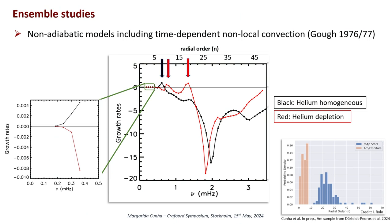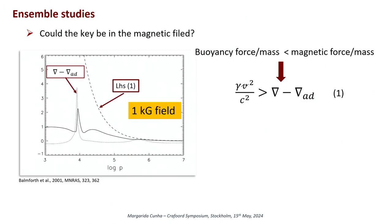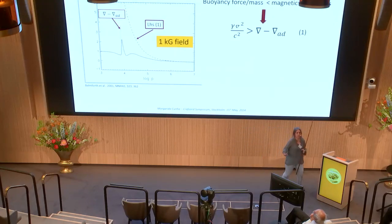Let me tell you about something that has interested Douglas for quite some time: the interaction between convection and magnetic field, and how the magnetic field may suppress convection. In these stars, you can do a back-of-the-envelope calculation to try to understand if a kilogauss field will suppress convection. This is a very shallow layer of convection in these stars. Here, v and c are the Alfvén and sound speed velocities. What I'm plotting is the left-hand side versus the right-hand side of this equation, and from this calculation, you would expect these fields to suppress convection.